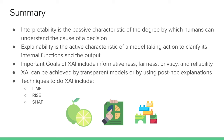Summing up today's lecture: interpretability is the passive characteristic of the degree to which humans can understand the cause of a decision a machine learning model took, whereas explainability is the active characteristic of a model taking action to clarify its internal functions and output. The most important goals of explainable AI include informativeness, fairness, privacy, and reliability. Explainable AI can be achieved either by having a transparent model — like a decision tree we can simulate — or by using post-hoc explanations such as saliency maps, LIME, RISE, or SHAP.